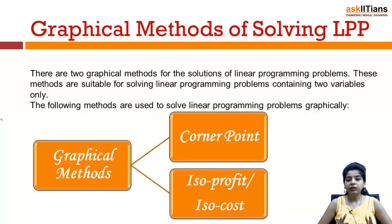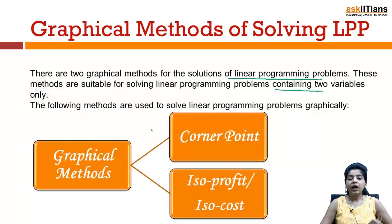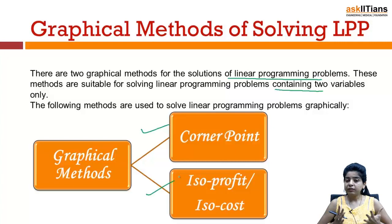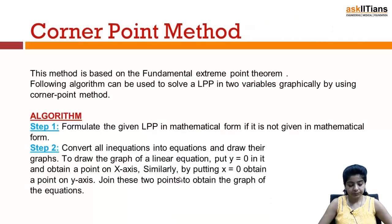Here we shall be discussing only the graphical methods; the simplex method we won't be discussing. There are two graphical methods for the solution of linear programming problems, used only for problems containing two variables. The methods are: the corner point method and the isoprofit/isocost method. Both methods are quite interesting and we shall discuss them one by one. This section our focus would be on the corner point method.